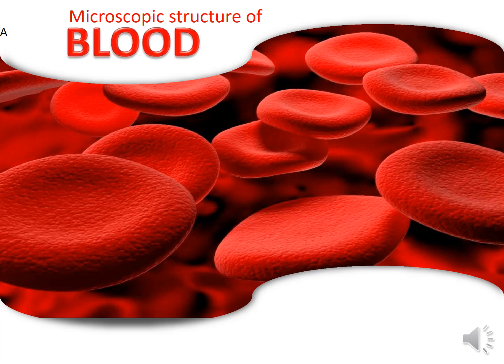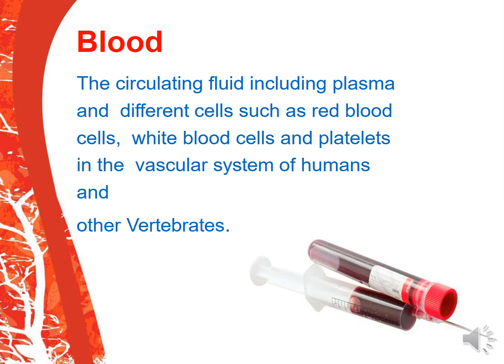Microscopic structure of blood. Blood is a circulating fluid, including plasma and different cells such as red blood cells, white blood cells, and platelets in the vascular system of humans and other vertebrates. Blood is a circulating fluid that includes plasma and different cells such as RBC, WBC, and platelets.